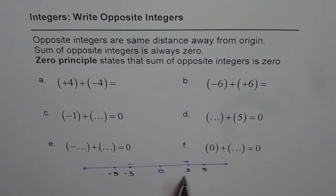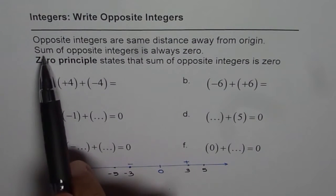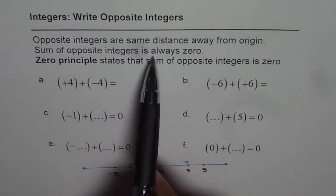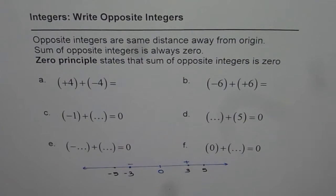Another important thing to remember is that sum of opposite integers is always 0. That means if I add minus 3 and plus 3, I will get 0. If I add minus 5 and plus 5, I will get 0. So sum of opposite integers is always 0.